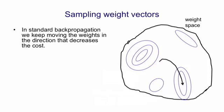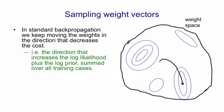In this weight space, I've drawn some contours, which are meant to be contours of equal values of our cost function. And the way backpropagation is normally used is we start with some small value of the weights and then we follow the gradient. We move downhill in our cost function in the direction that increases the log likelihood plus the log prior summed over all training cases.